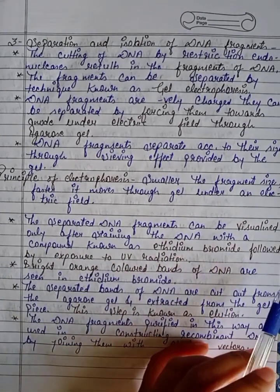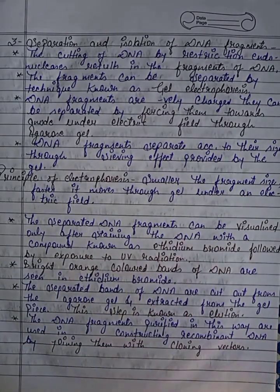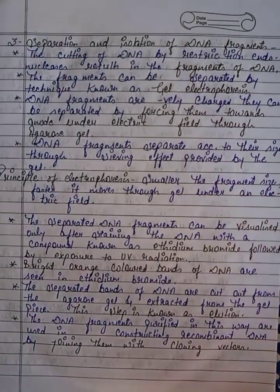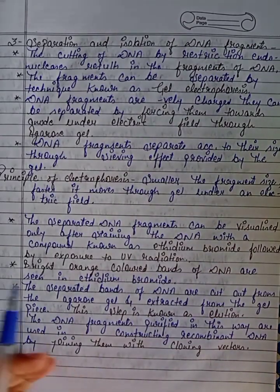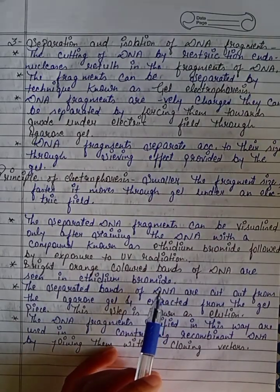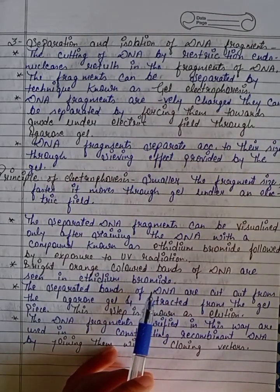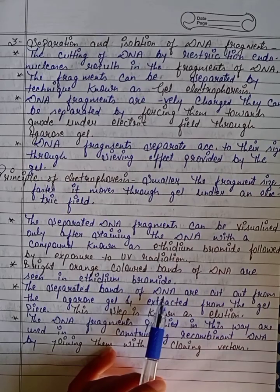The separated DNA fragments can be visualized only after staining the DNA with a compound known as ethidium bromide, followed by exposure to UV radiation. Bright orange color bands of DNA are seen after ethidium bromide staining.